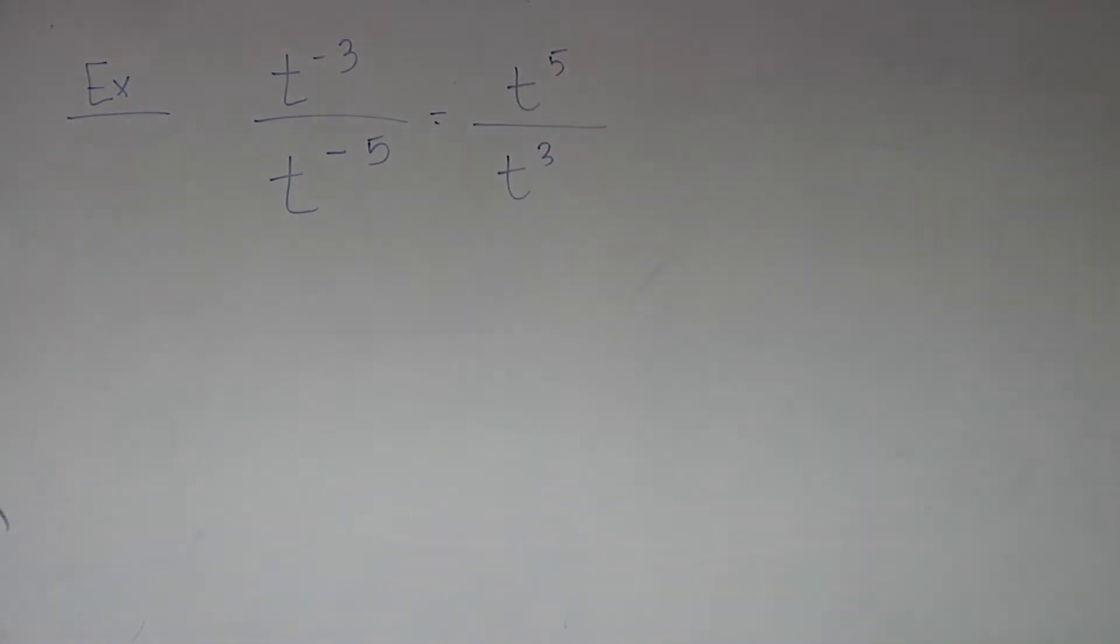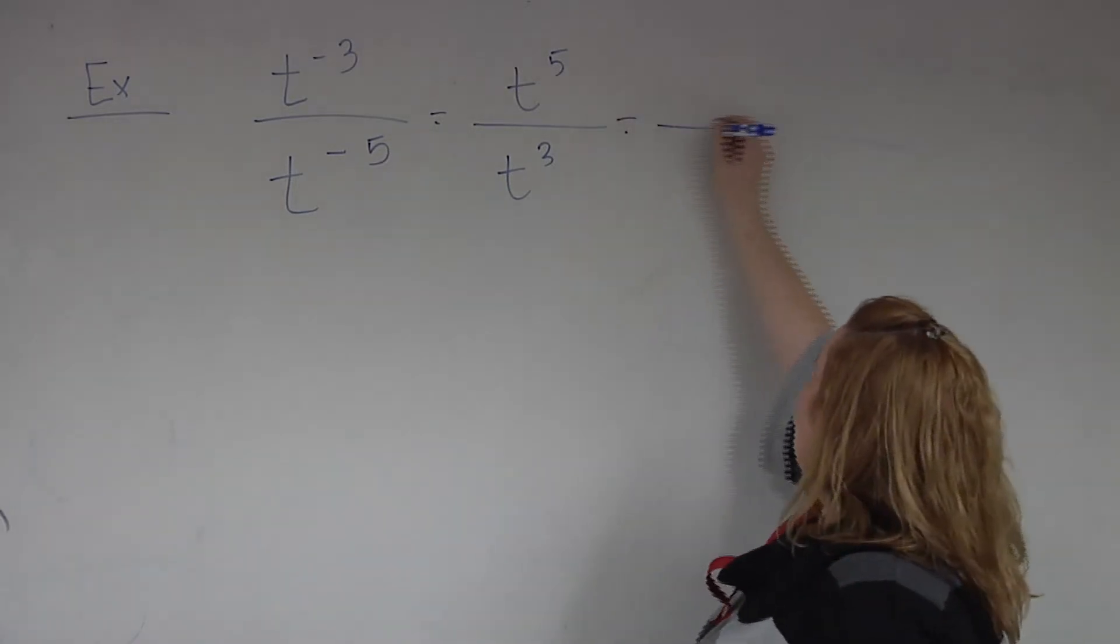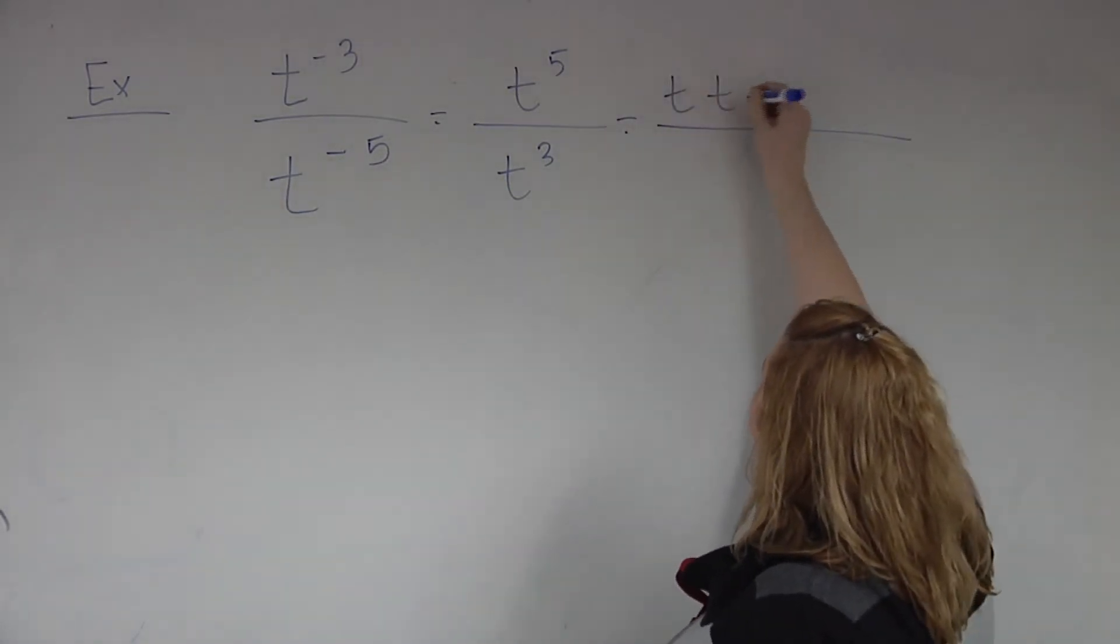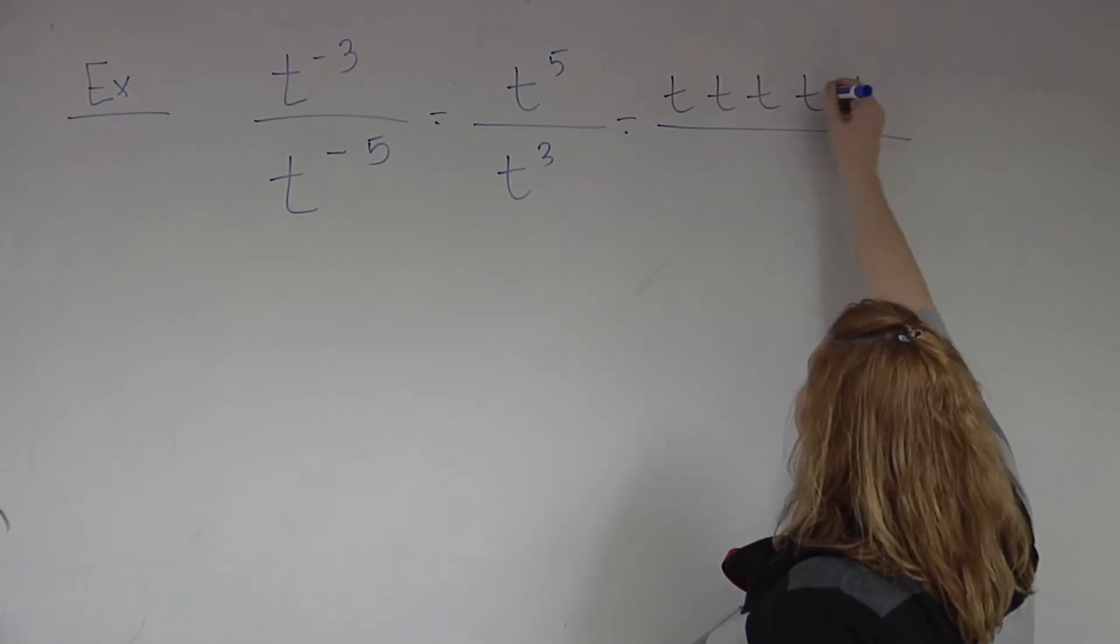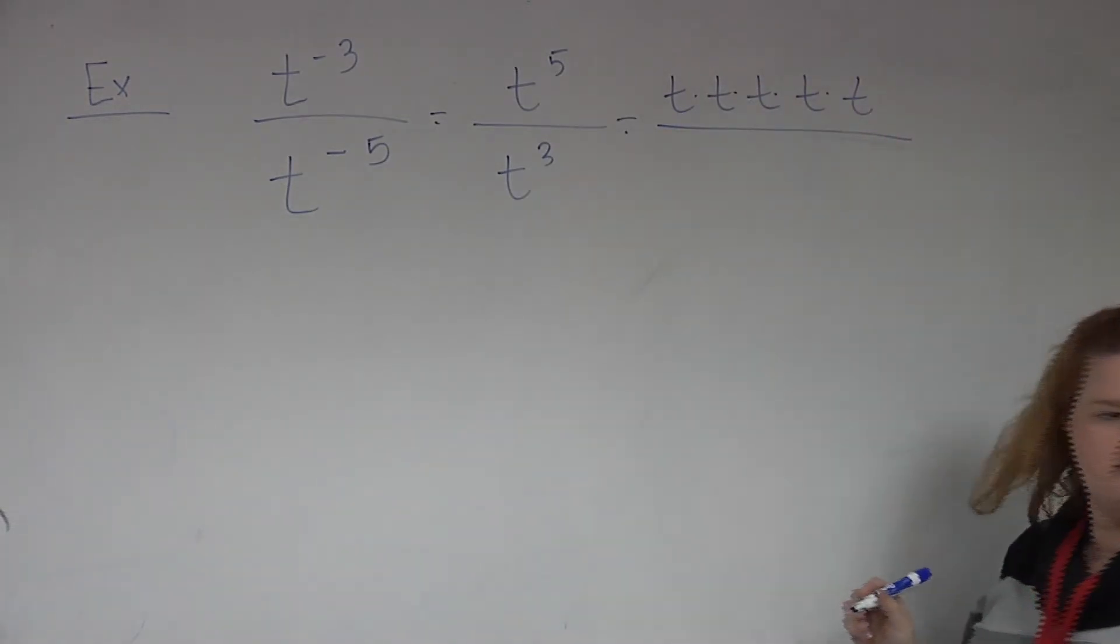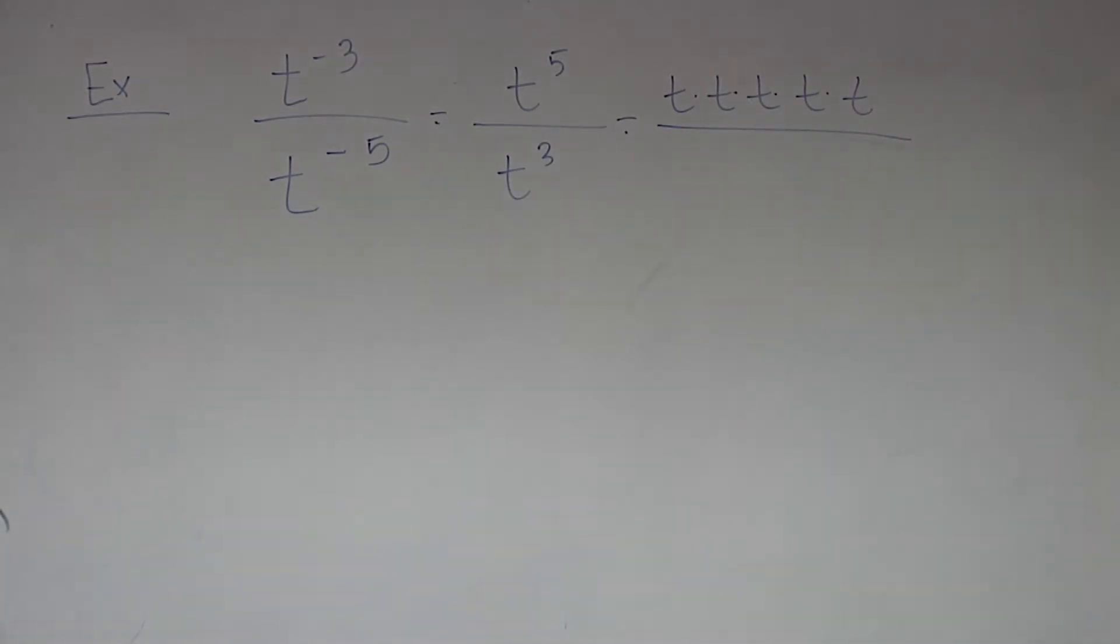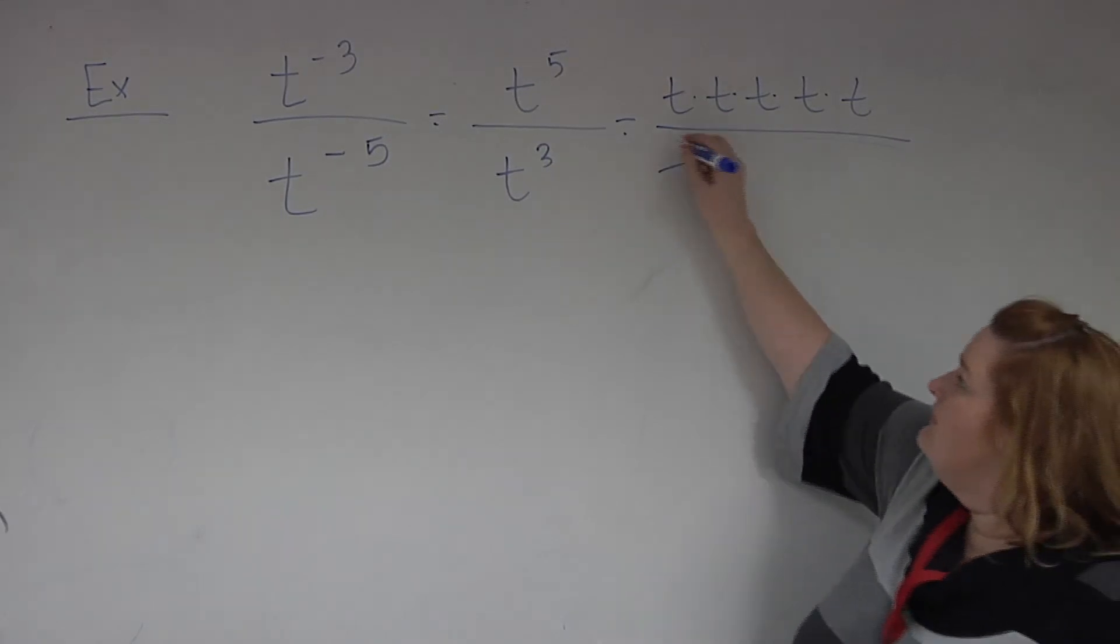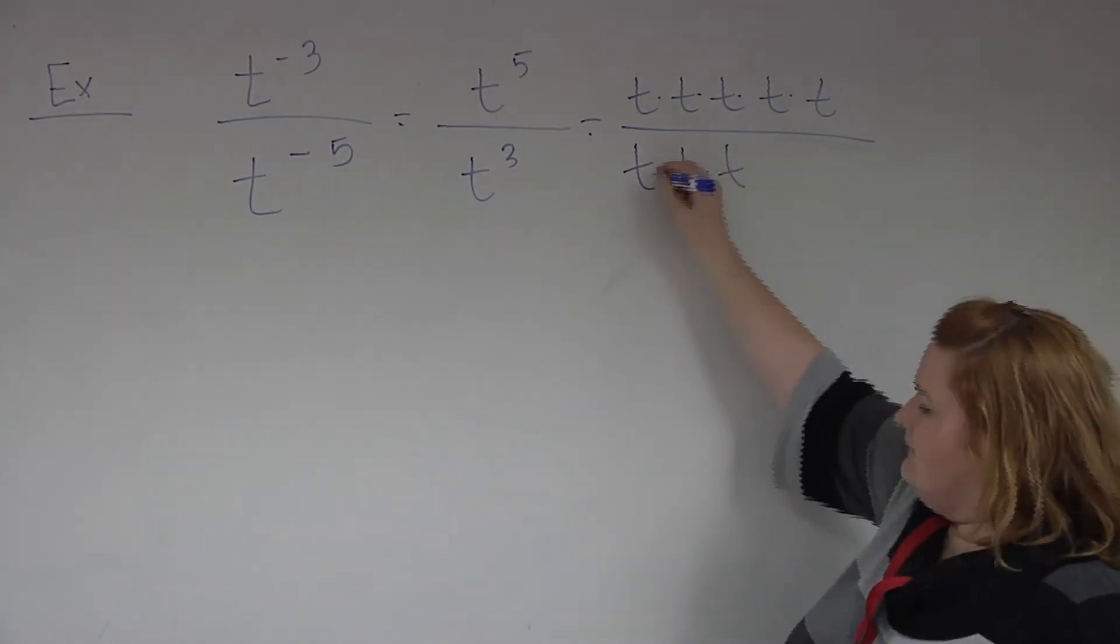Now we need to reduce. I'm going to go the old school way. What does that 5 mean in the numerator? Exactly. You've got 5 t's. 1, 2, 3, 4, 5. And they're all held on by multiplication. How many t's do you have in the denominator? 3. So that answer would become just t to the 2nd.